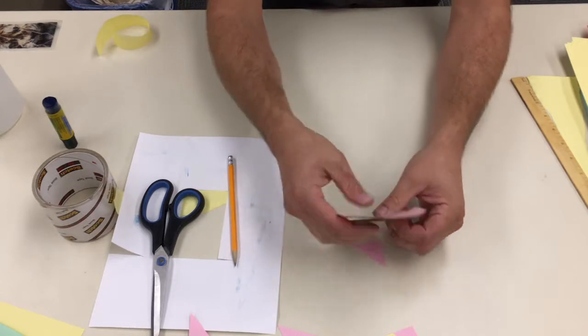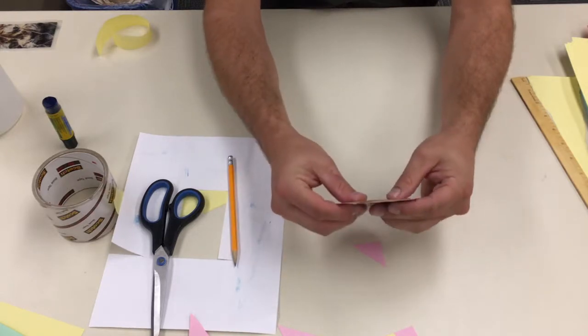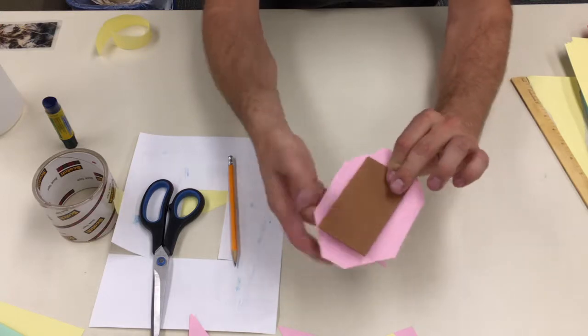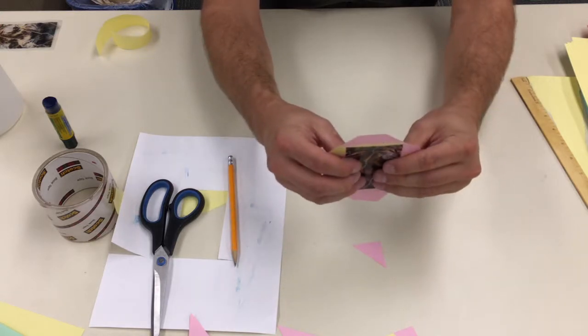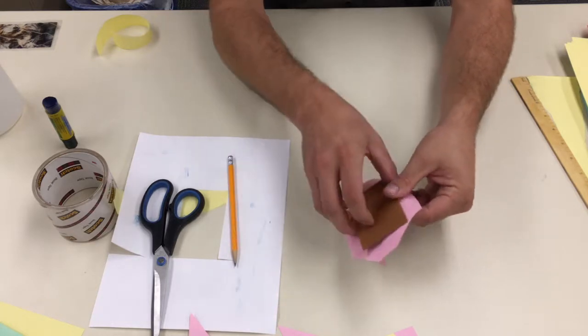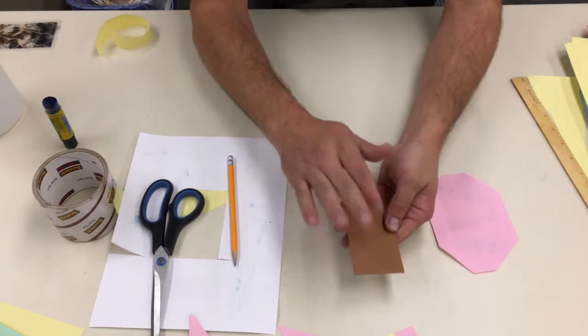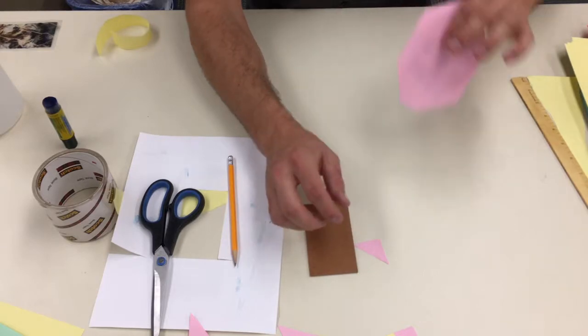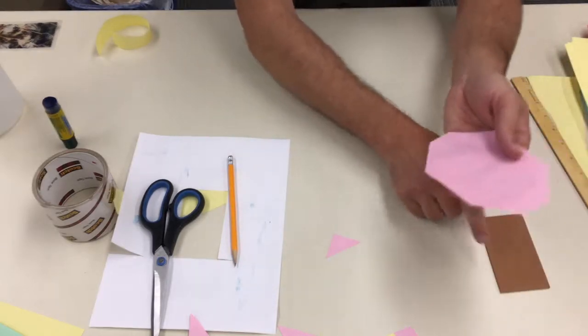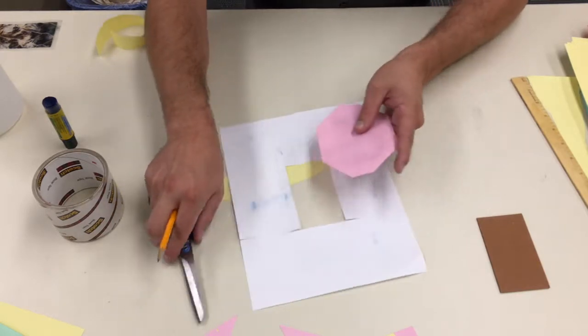Alright, so now, place my image so it's right over this. I just want to make sure it's going to fit. Alright, yep, it will. So, now I'm going to glue, I can either glue this, or I can glue the back of my paper to put it on to my cardboard. I'm going to go ahead and glue my paper.